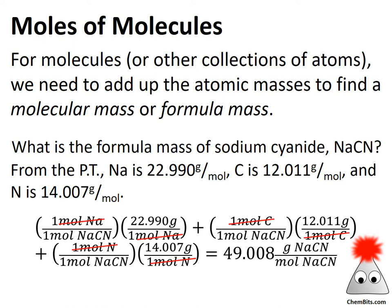Always check your units and make sure they cancel correctly. Here, moles of sodium cancel, and we're left with grams per mole of sodium cyanide. When adding, we need the same units throughout. Moles of carbon cancel, leaving grams per mole of sodium cyanide. Same thing with nitrogen — cancel moles of nitrogen, left with grams per mole of sodium cyanide. So the result is grams per mole of sodium cyanide.